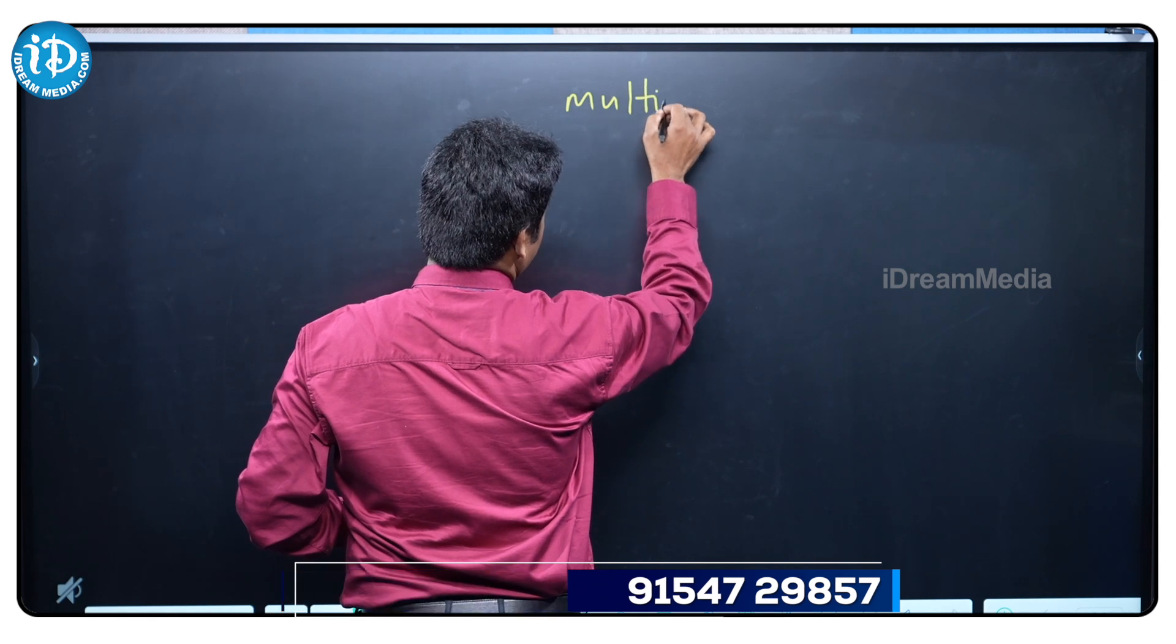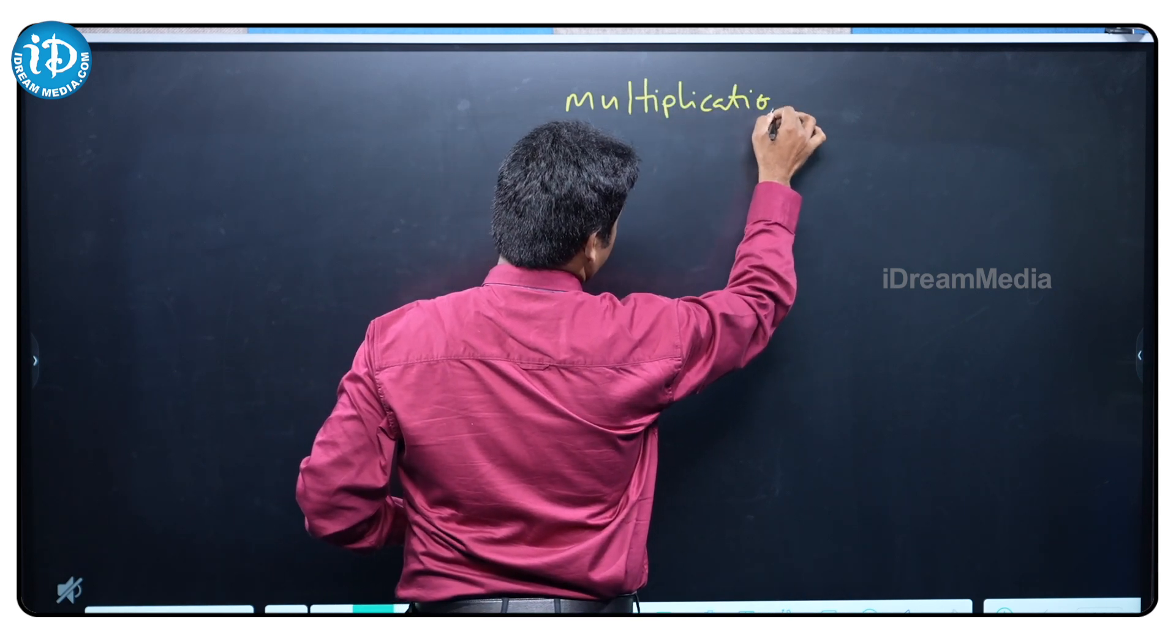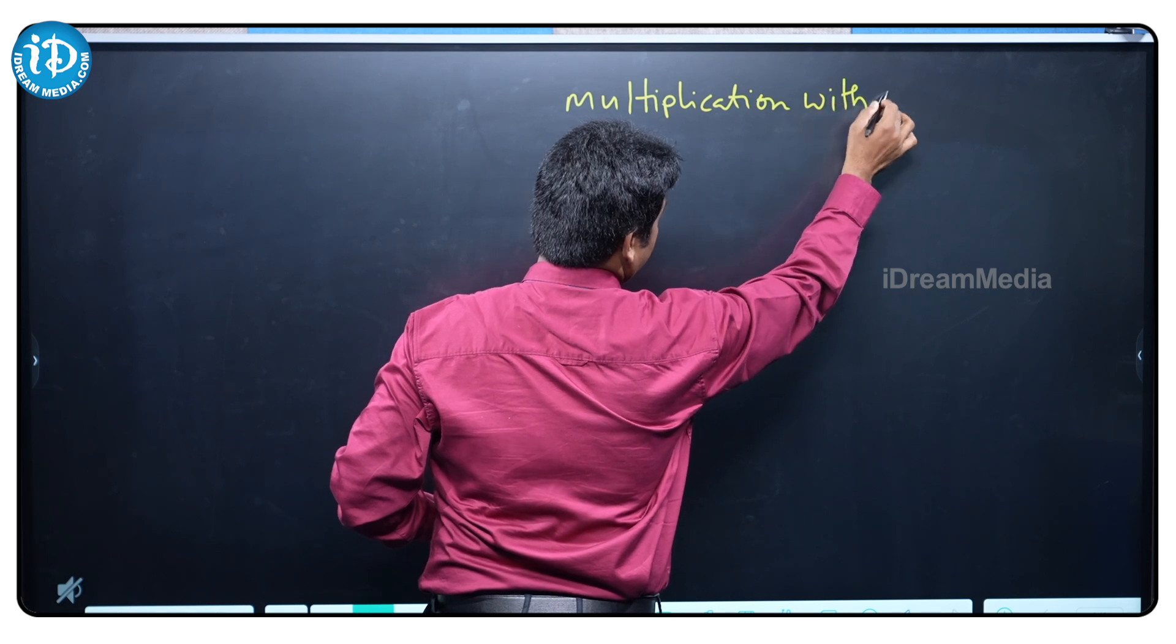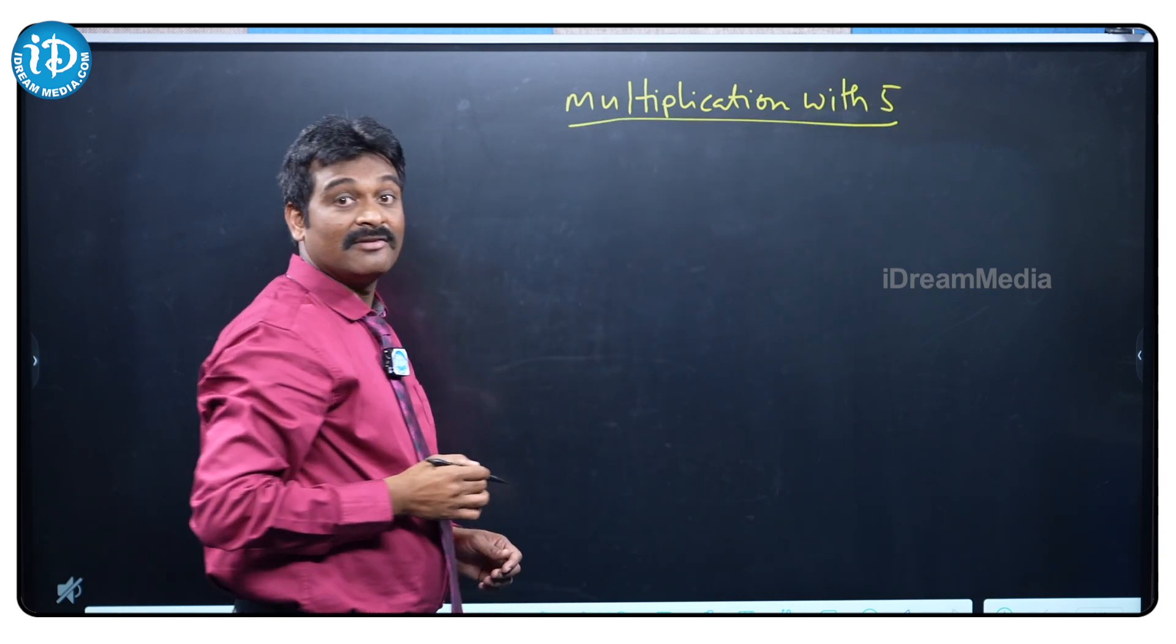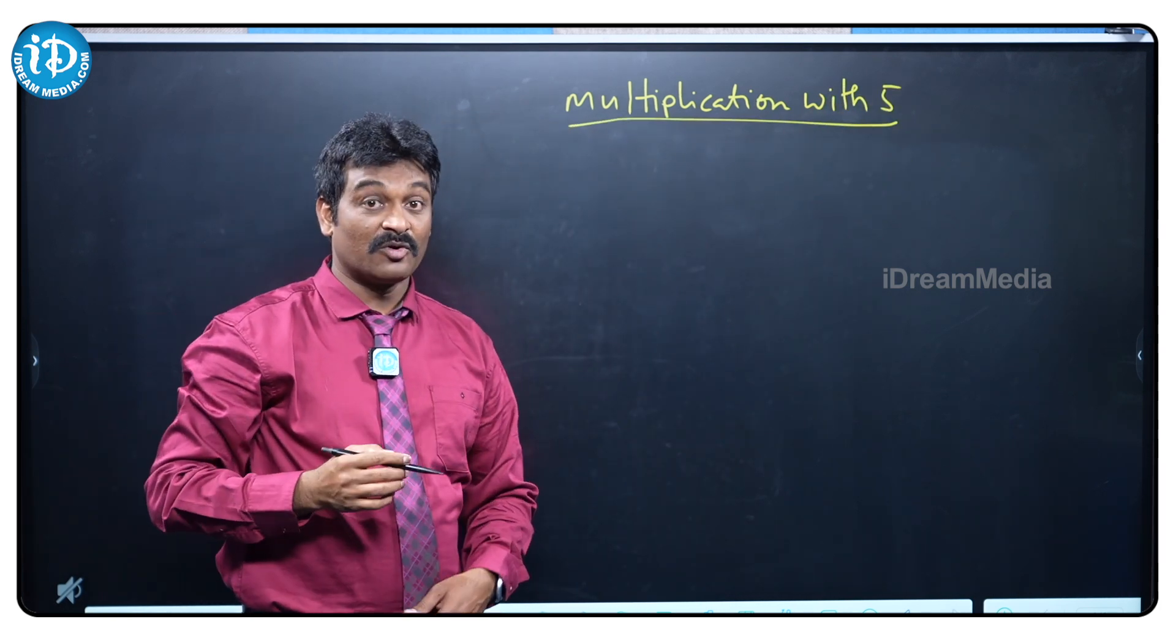Multiplication with 5. How to do multiplication with 5 very quickly without pen and paper?